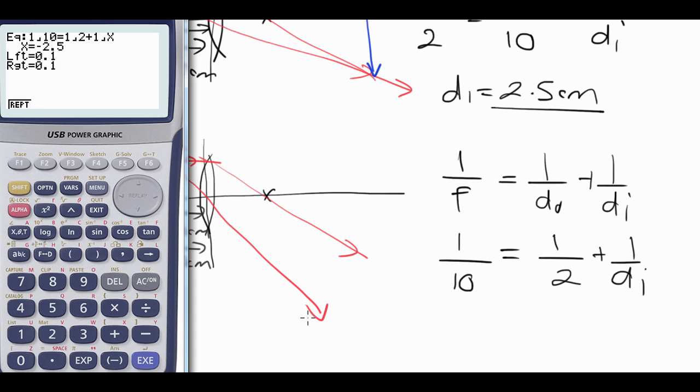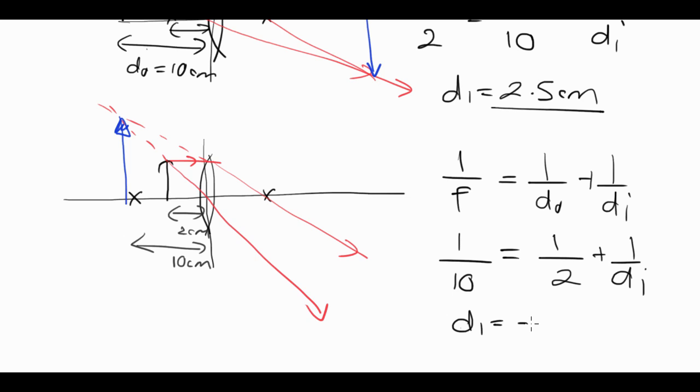Solve that. Negative 2.5. So di is negative 2.5 centimeters.